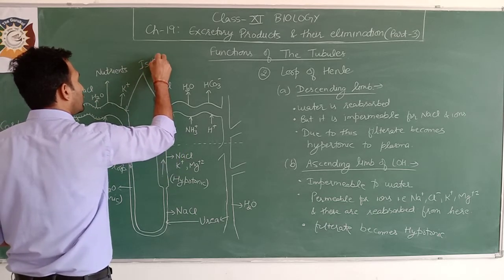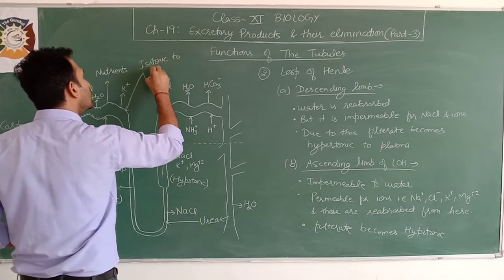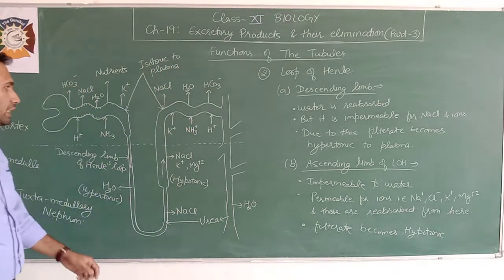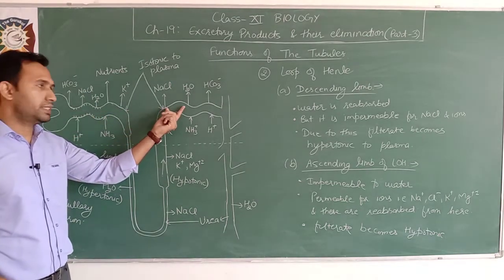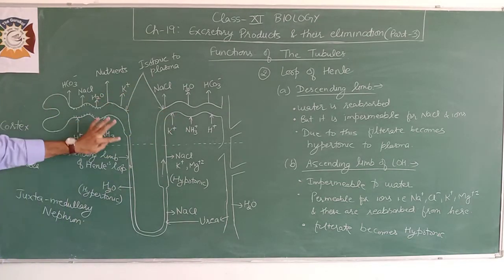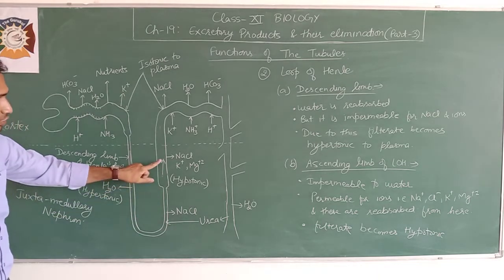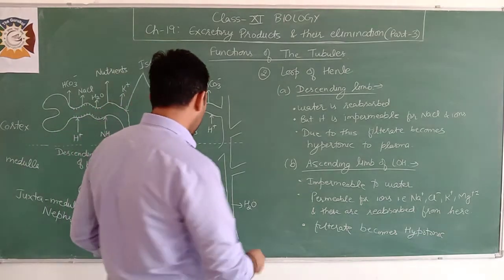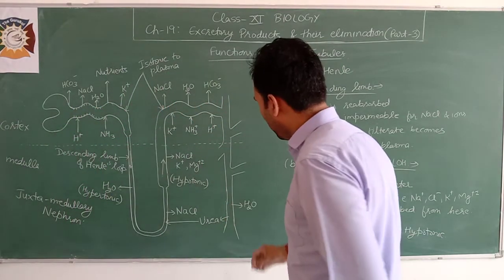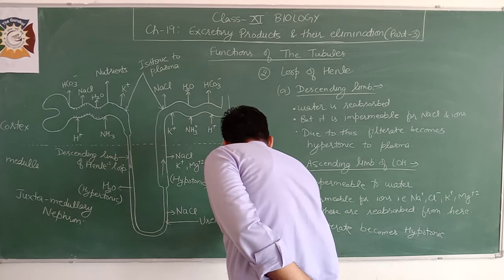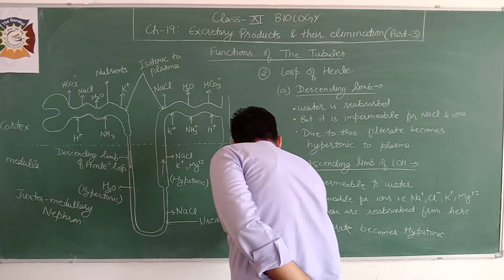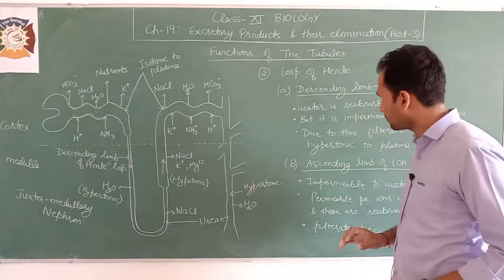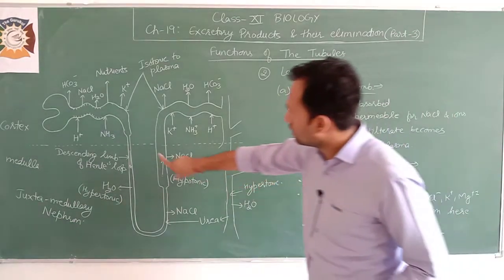Summary of tonicity changes: filtrate is isotonic with blood plasma at PCT and DCT level; it becomes hypertonic at the bottom of the descending limb where water leaves, and hypotonic at the ascending limb where ions leave.